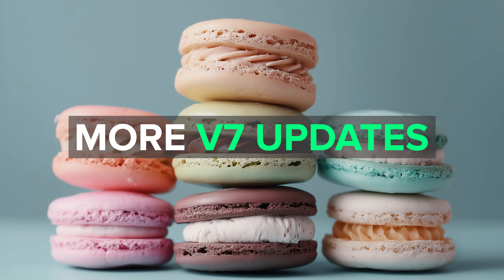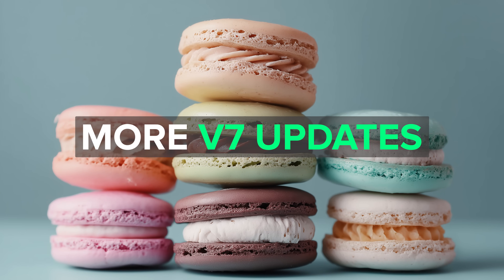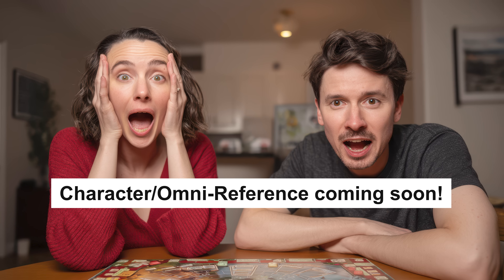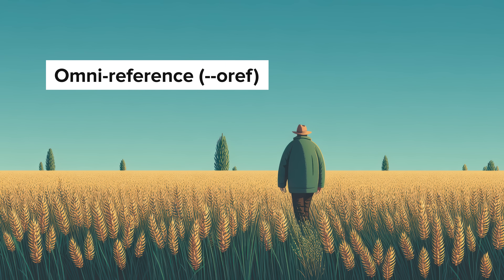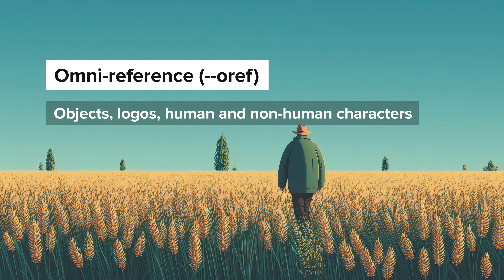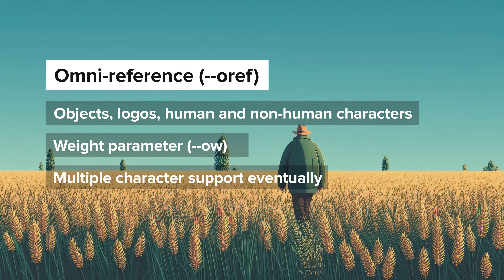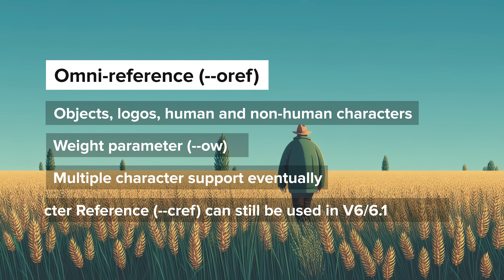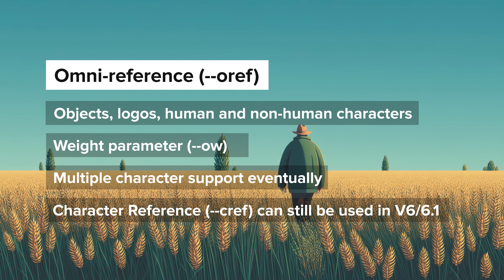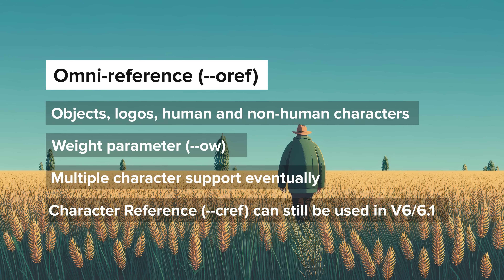Then we have some near-future updates. The Omni Reference should be out any moment now, maybe even right as I post this video. The Omni Reference or OREF is a new and improved version of character reference that works with the V7 model. It will support objects, logos, human and non-human characters, and more. It's supposed to work equally as well with both Midjourney and non-Midjourney created images, so if you want to create selfies, that should work better. There will be a weight parameter to give us some control over how similar the result is to the input reference image. Support for multiple characters will come in a future update. Character Reference will still be available for V6 — that's not going away — but V7 will use Omni Reference instead.